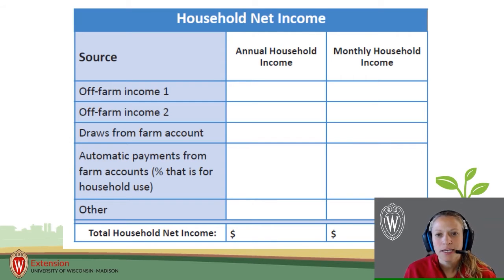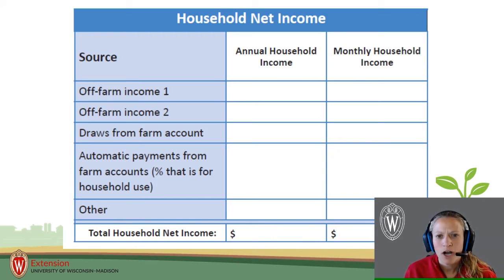As we look at who is paying for those family expenses, we need to consider income sources. On page 15 of the workbook, you should complete the section on household net income.